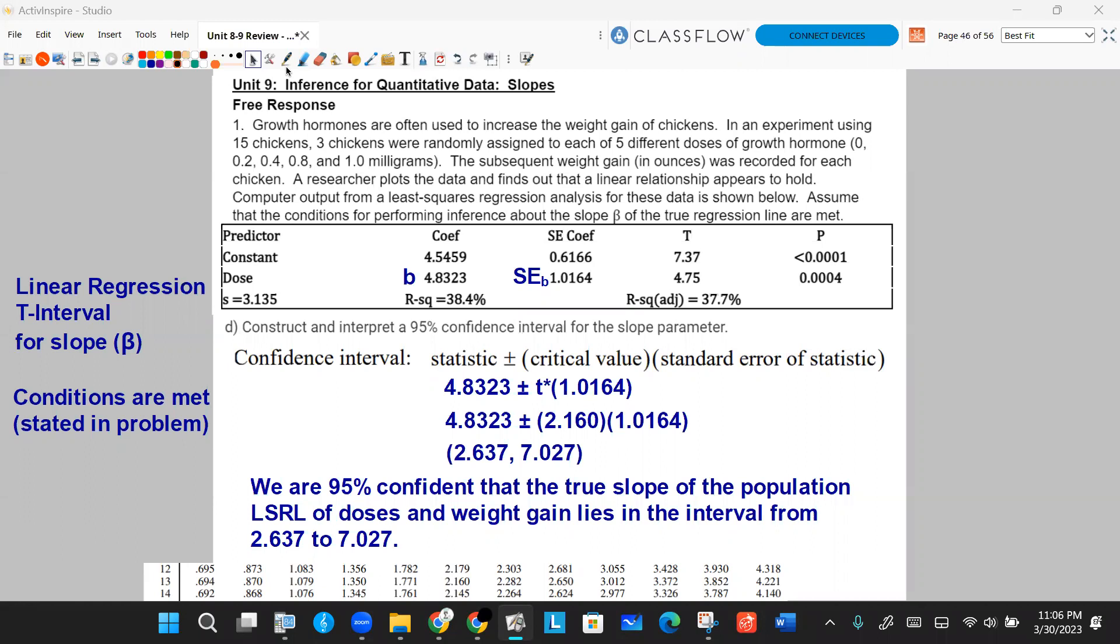Simply do your conclusion. We are 95% confident that the true slope of the population LSRL of doses and weight gain for chickens lies in the interval from 2.637 to 7.027. So I went through that kind of quickly there. Let's do our last part here and then move on to the multiple choice in a different video.